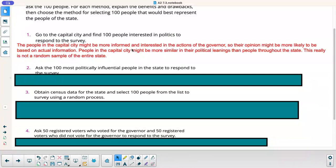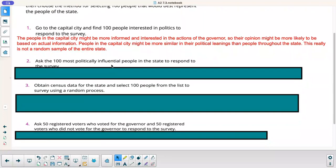So what are the drawbacks? People in the capital city might be more informed and interested in the actions of the governor, so their opinion might be more likely to be based on actual information. People in the capital city might be more similar in their political leanings than people throughout the state. This really is not a random sample of the entire state. Bottom line, if you want to get a sample of the whole state, you can't just interview people in one part of the state. That would not be a good representation.